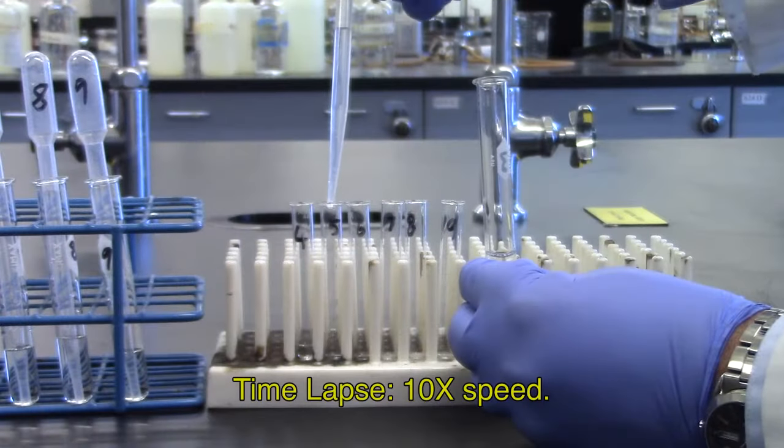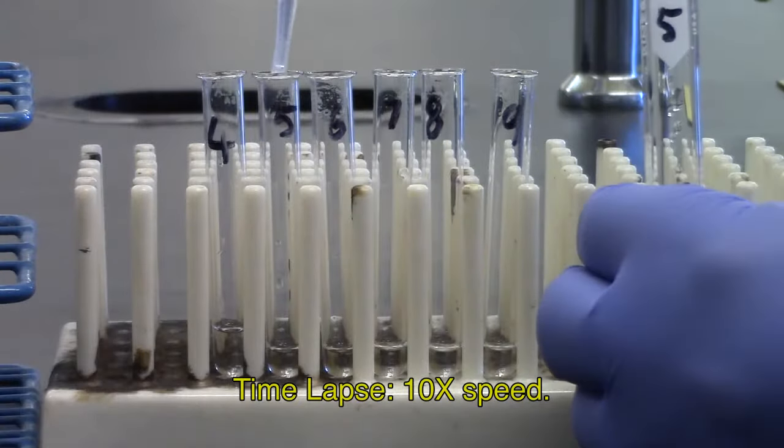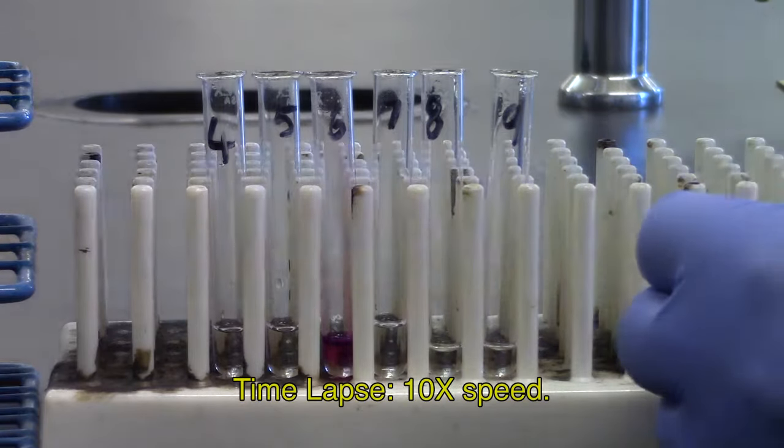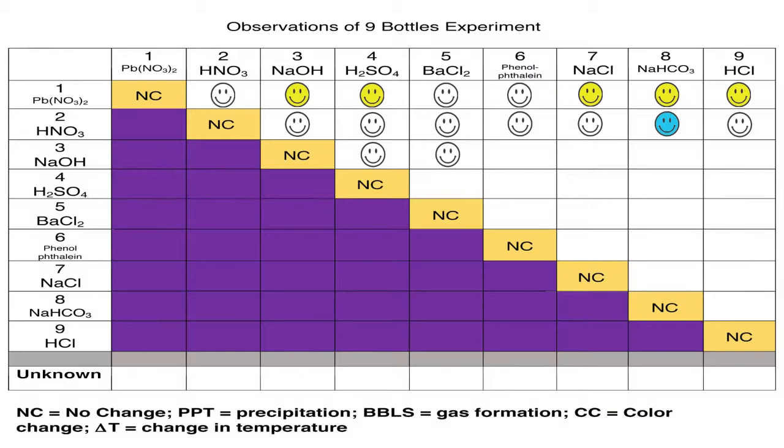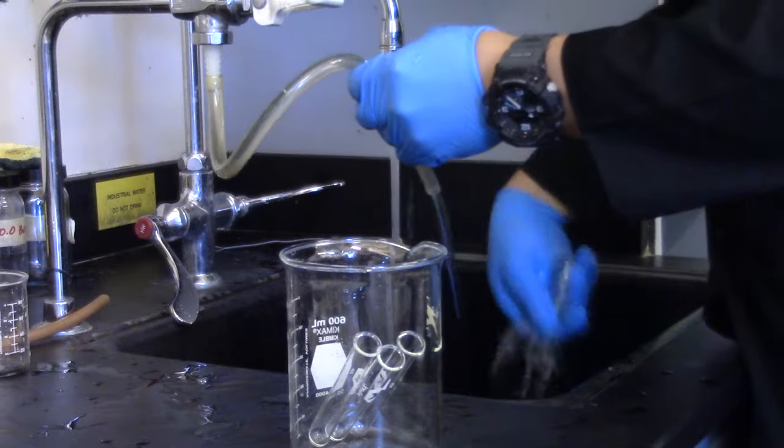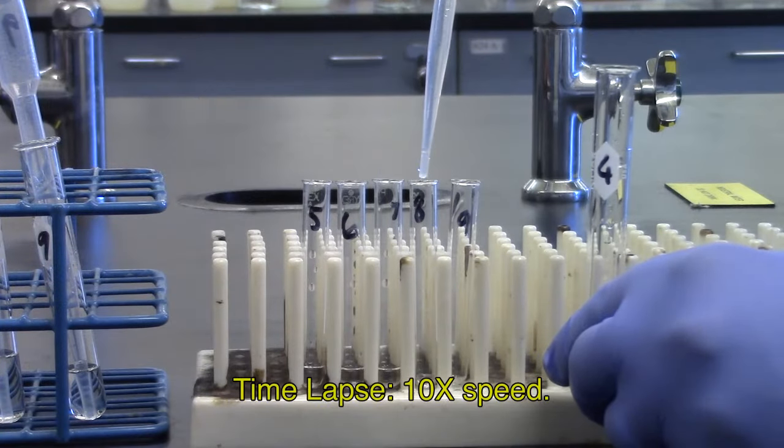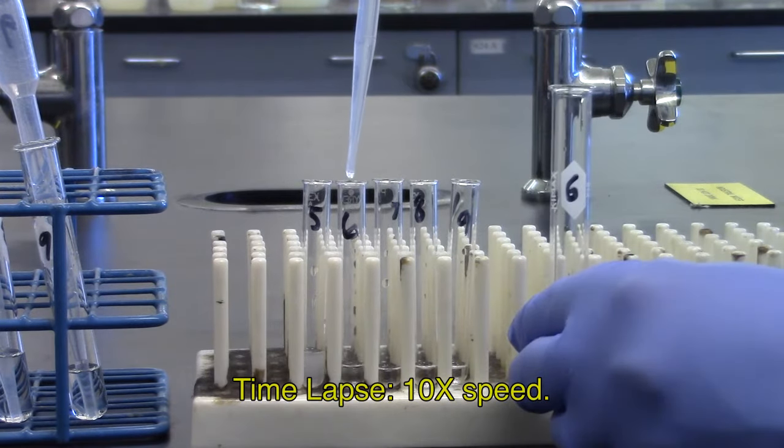In round three, prepare six test tubes of number three, sodium hydroxide, to mix with four to nine. You can see the pattern. Round four: number four, sulfuric acid, is combined with five to nine.